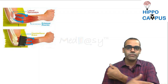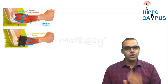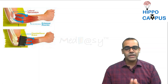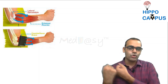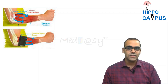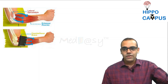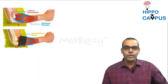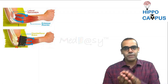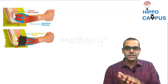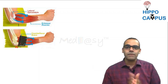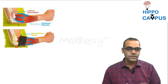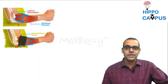When the extensor muscles are used, they pull the lateral epicondyle causing pain and increased inflammation. The counter force brace is worn just below the lateral epicondyle. When the extensor muscles are used, the brace compresses them, reducing the pull transmitted to the lateral epicondyle. This decreases pain and inflammation, helping heal the tennis elbow.